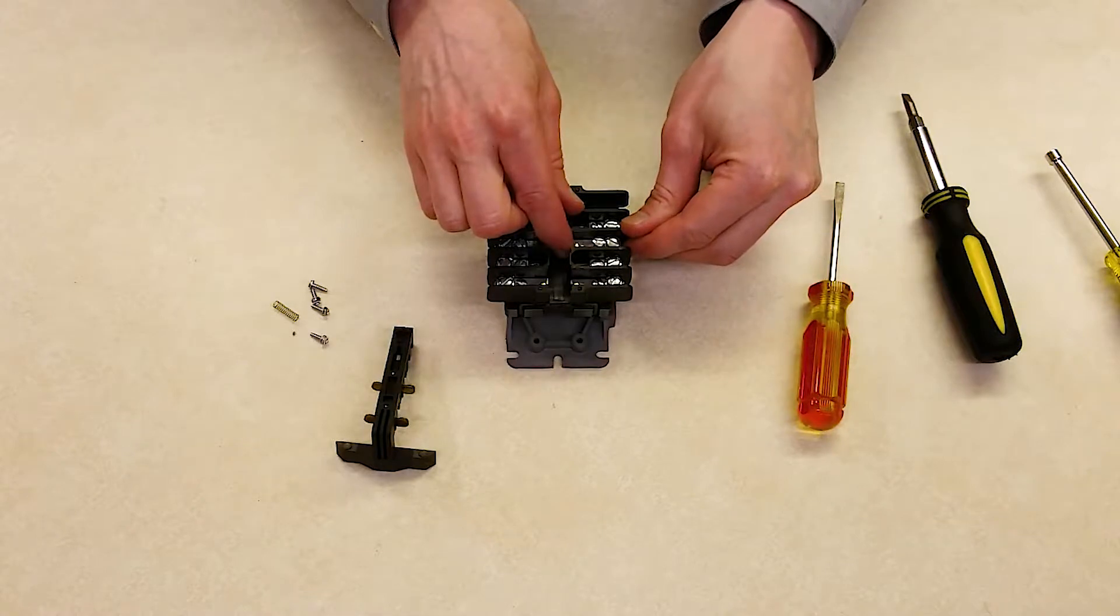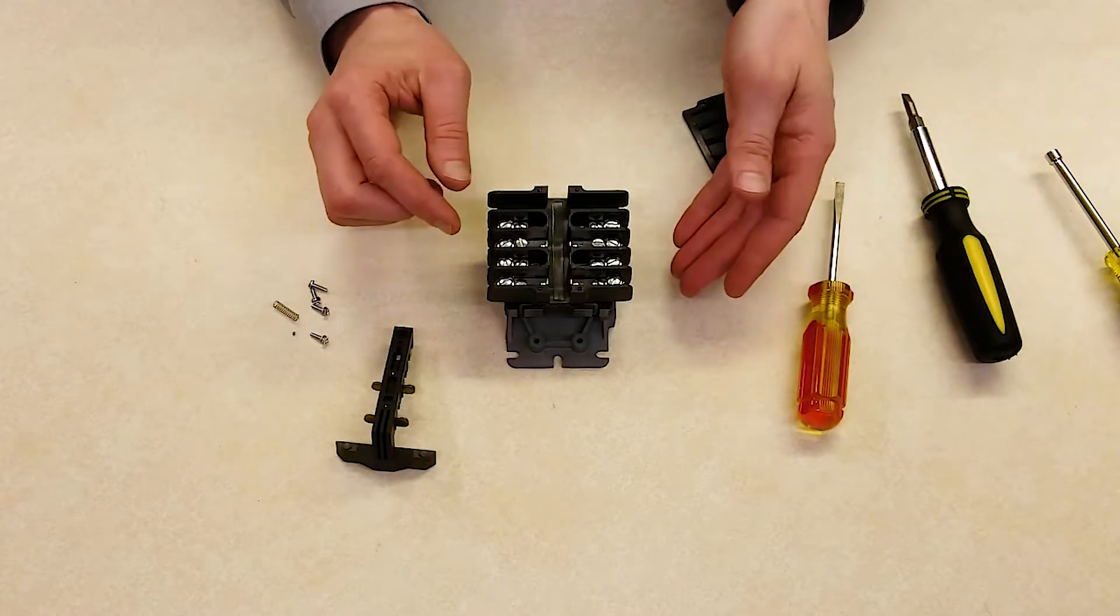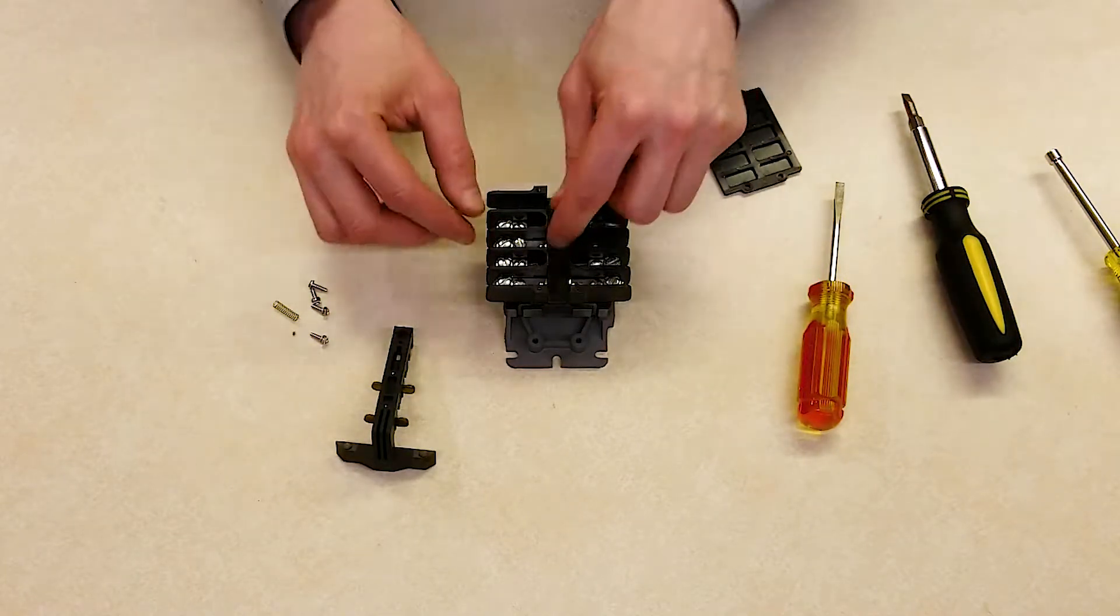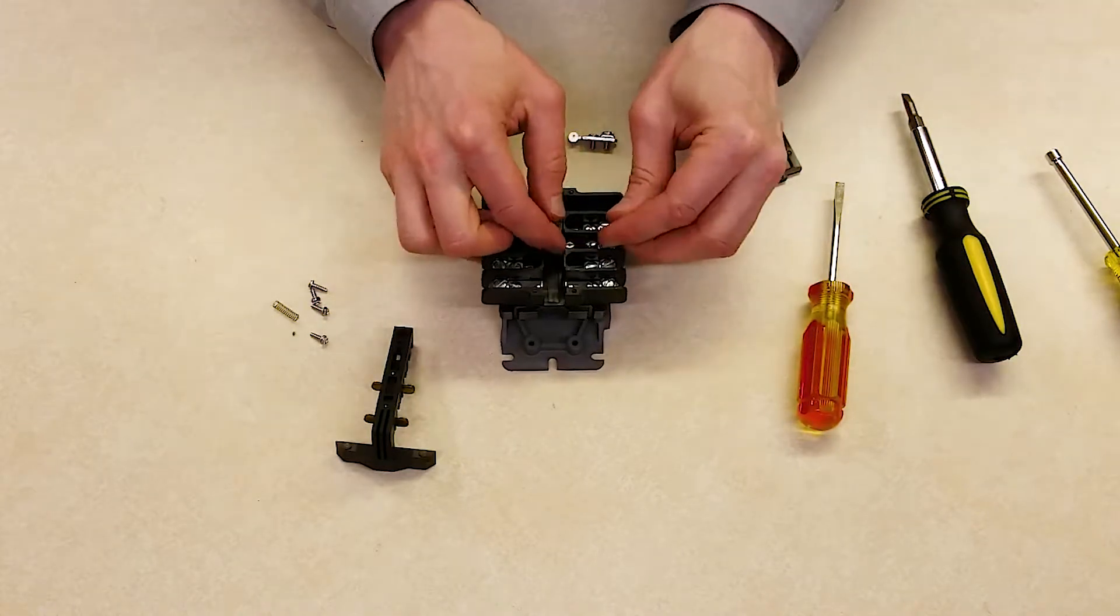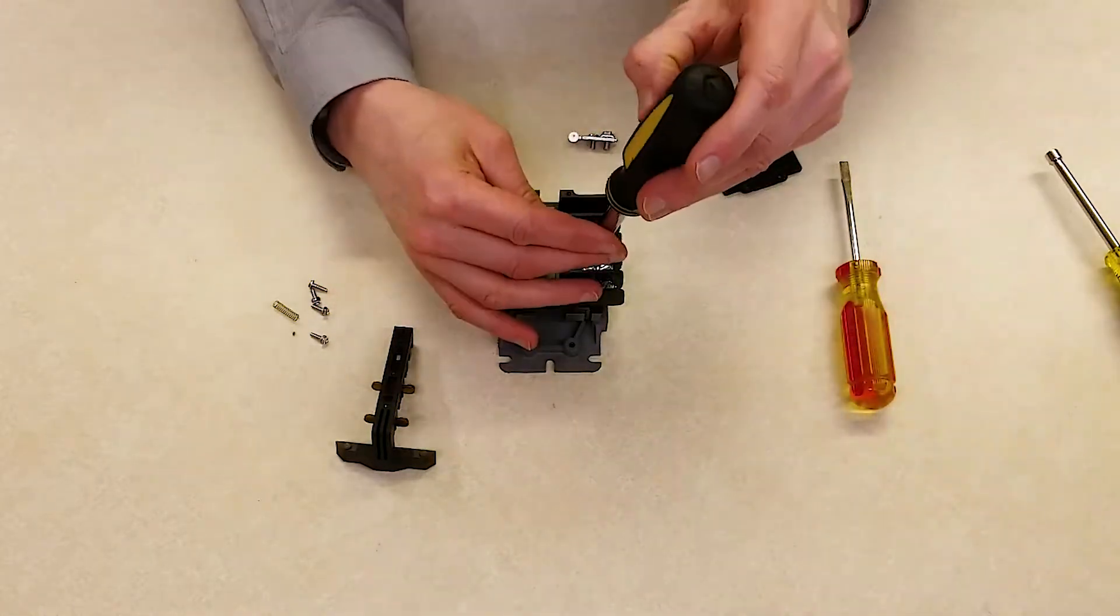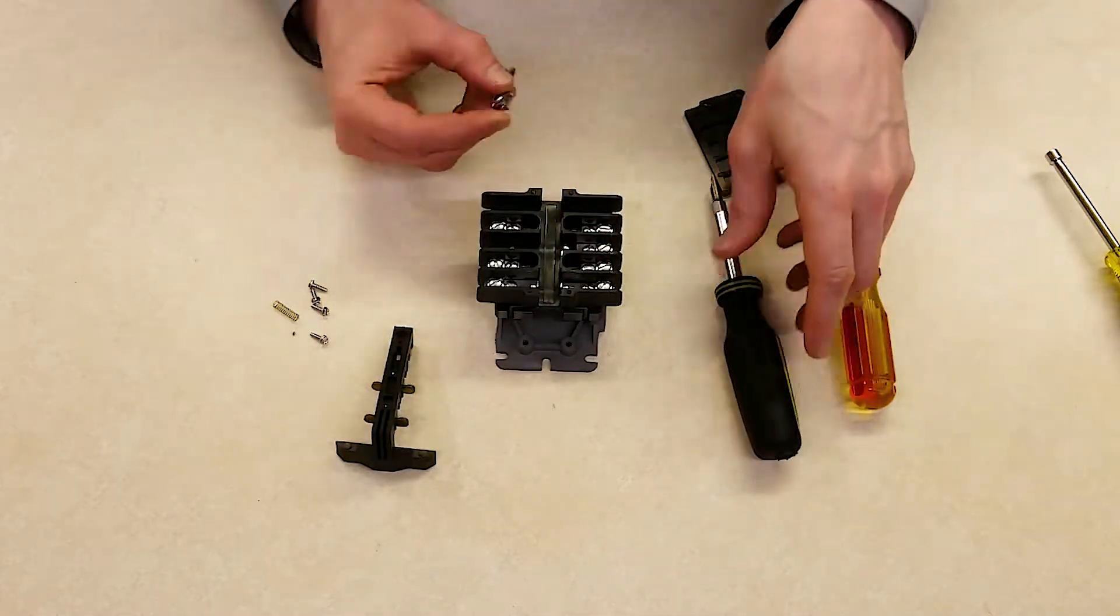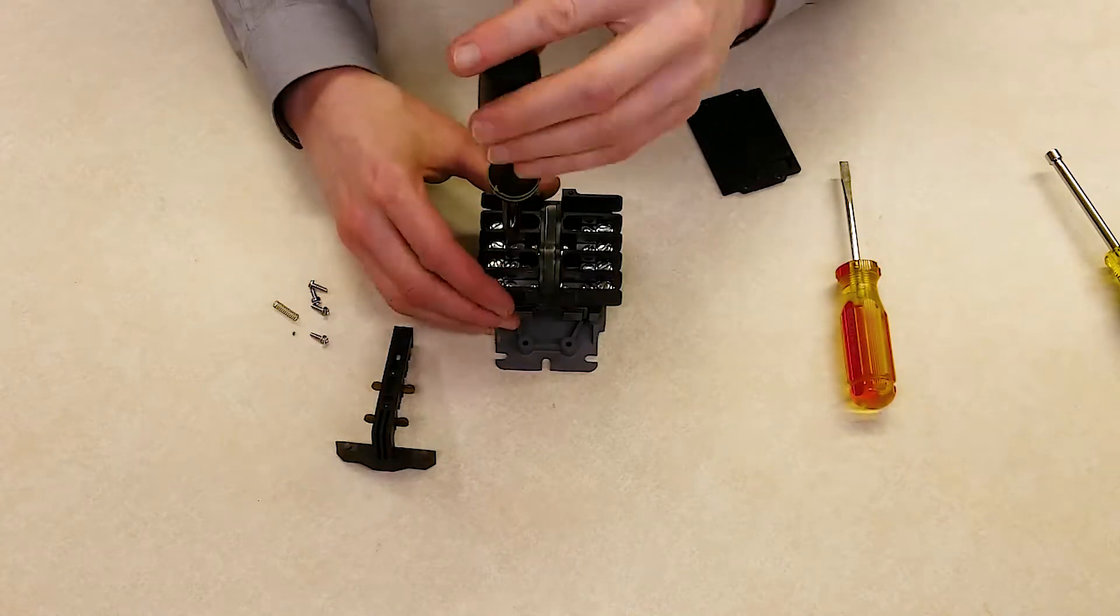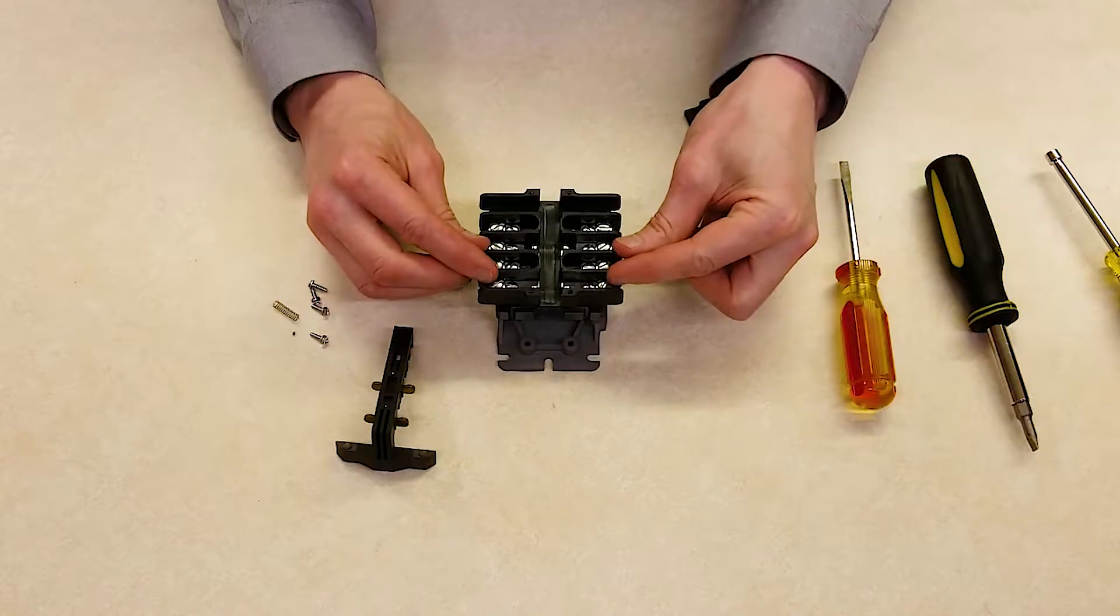Now I could replace these with a new contact kit. In this case, all I want to do is change it to normally closed. So I'm going to remove each side and swap them. You can see now that the contacts are facing in opposite directions.